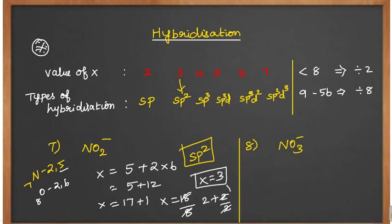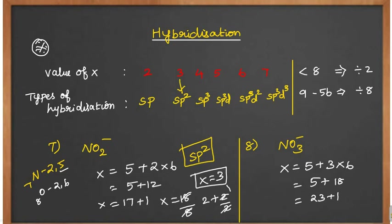Let's discuss one more problem: NO₃⁻. Nitrogen's outermost electron is 5. There are 3 oxygens with outermost electron 6, so 3×6 = 18. So 18 plus 5 = 23, plus 1 for the negative charge = 24. Divide by 8: 3×8 is 24, so x value is 3, meaning sp2 hybridization.